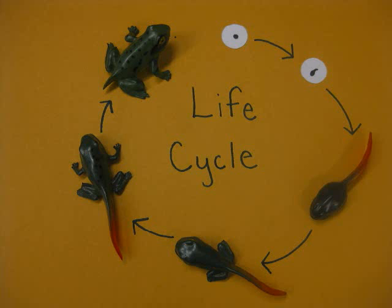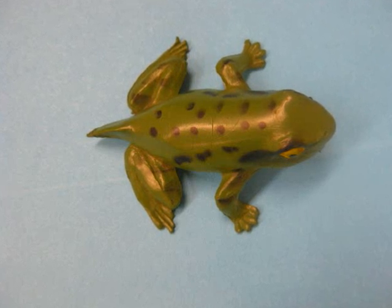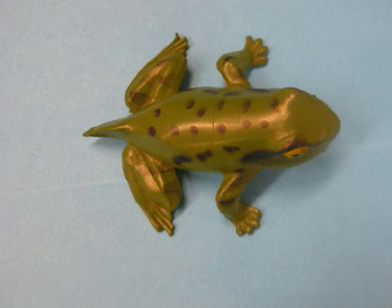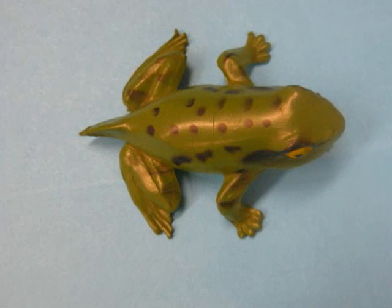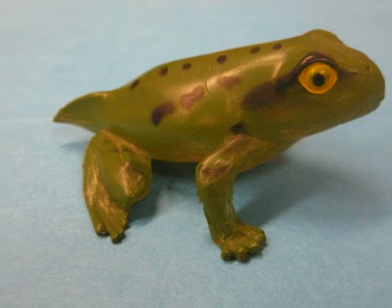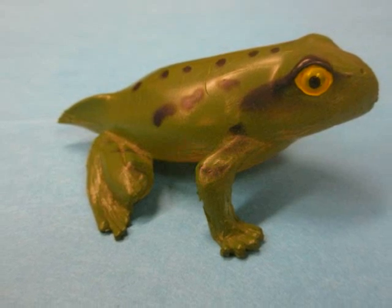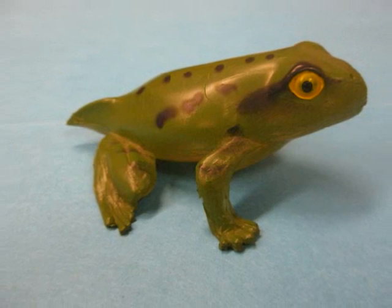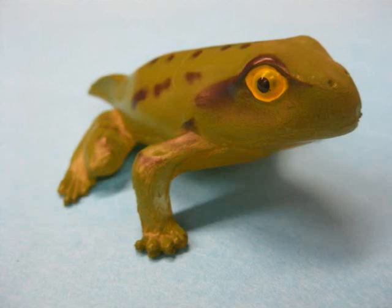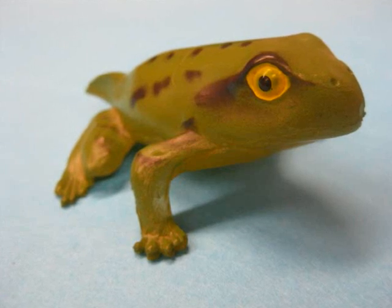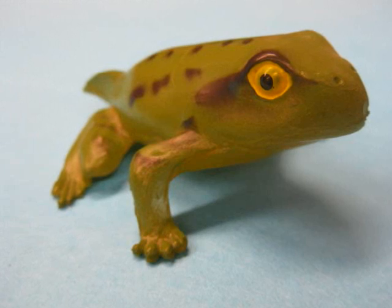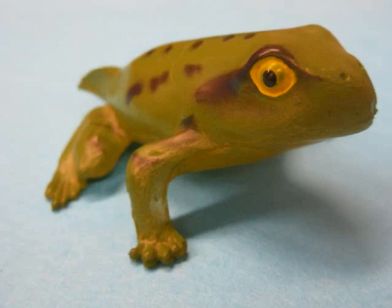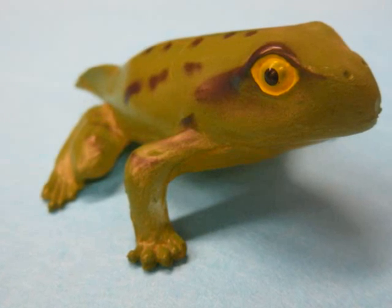The sixth and final stage is the frog. The legs are fully developed for the frog to jump and the feet are webbed for the frog to swim. The lungs are fully developed so the frog can live on land, but it usually stays close to the water. The frog will eventually find a mate and the whole cycle begins again.